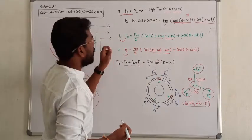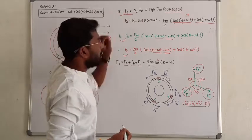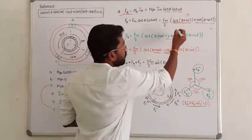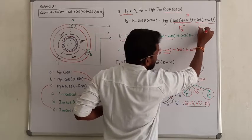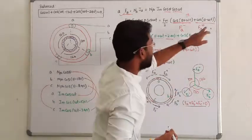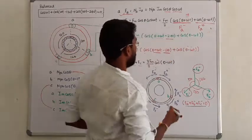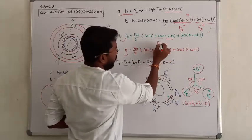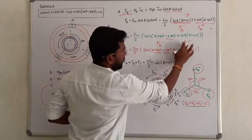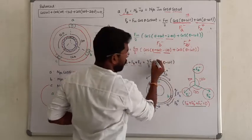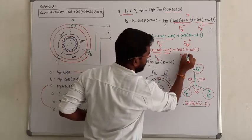So the conclusion is, for each phase, applying the current develops two MMFs. Let me call them: for phase A, F_A minus and F_A plus — that is a positive MMF and a negative MMF. At the end of phase B, again we have two MMFs — a negative MMF and a positive MMF. For phase C, we again have two MMFs — one negative MMF and one positive MMF.